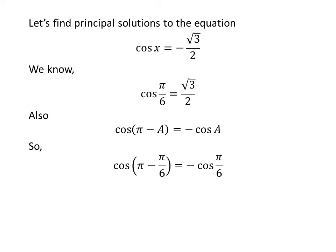Applying the above identity, cosine of pi minus pi upon 6 is equal to minus cosine of pi upon 6. As pi minus pi upon 6 is equal to 5 times pi upon 6, and plugging in the value of cosine of pi upon 6, we get cosine of 5 times pi upon 6 is equal to minus square root of 3 upon 2.